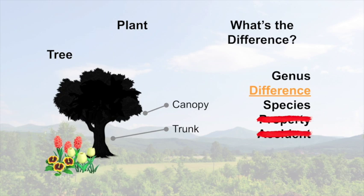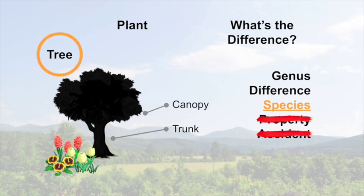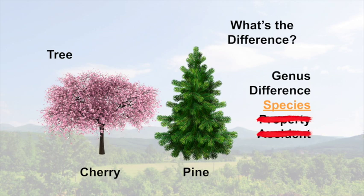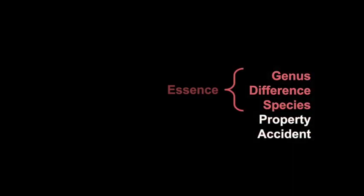We also want to steer away from property—something that's not in the definition of what it is to be a tree or a plant, but comes from the definition. Once we have genus and difference, that produces the species. Think of genus and species as a relationship, as broader and narrower categories. The species here is tree, where the genus is plant. Within the category tree, you have cherry trees and pine trees; the difference is going to create the species. In scientific classification, we designate a species by the genus first and then the species. So genus, difference, and species combine to form the essence of a thing.